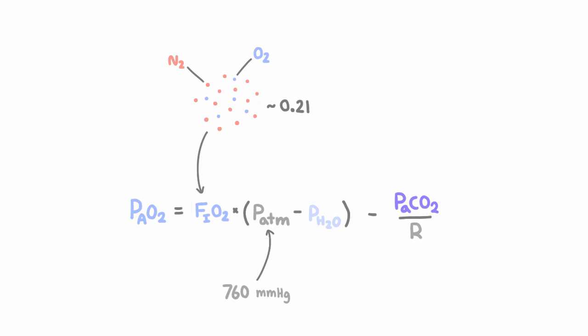So if this first term represents how much oxygen is in the air we breathe in, why isn't this whole first term just FiO2 times P atm? And where is this pH2O term coming from? Well, without going into too much detail, this pH2O represents water vapor because our bodies are very moist, and by the time the air we breathe in reaches the trachea,